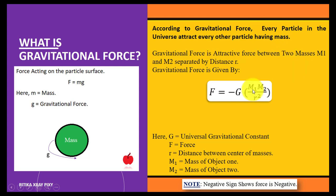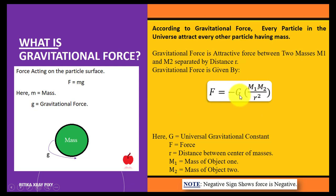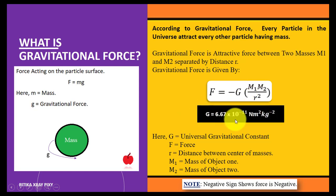Gravitational force is the attractive force between two masses separated by distance r. The equation used to compute gravitational force is: F = G × (m1 × m2) / r², where G is the universal gravitational constant, F is the force, r is the distance, and m1 and m2 are the masses. The negative sign indicates that the force is attractive.